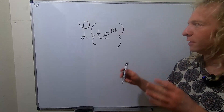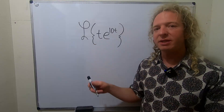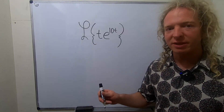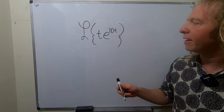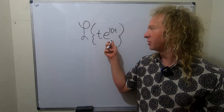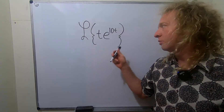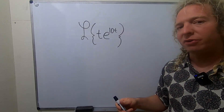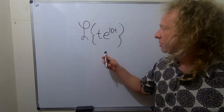In this video, we're going to find the Laplace transform of t times e to the 10t. Whenever you have an exponential times something else, you can use what's called the first translation theorem.